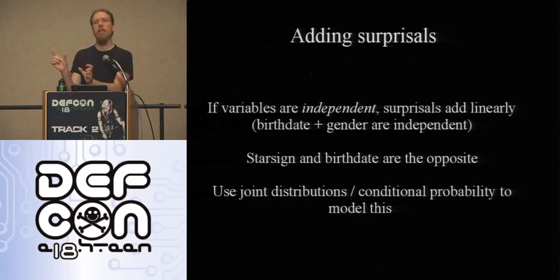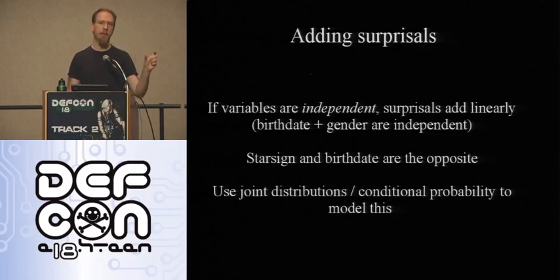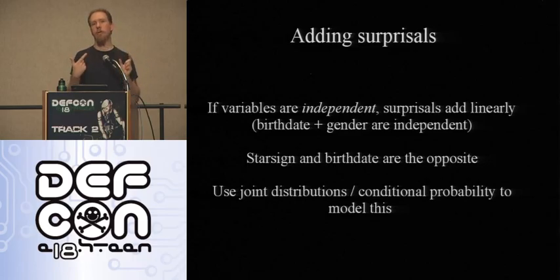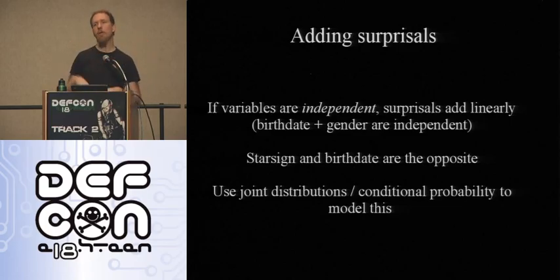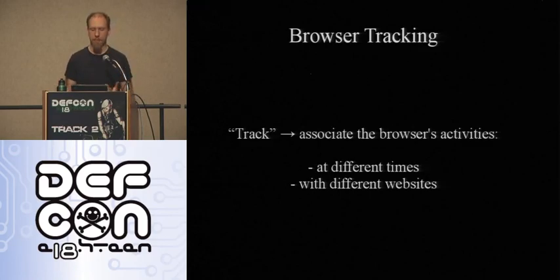A key point is that you can't always add surprisals together. If you learn someone's birth date and then learn what city they were born in, those are probably independent variables, so you can add the bits together. But if you already know someone's birth date and someone tells you their star sign, you won't learn any more information. So to know how two measurements add together, you need to use conditional probabilities.